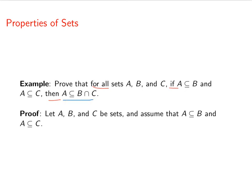And our goal now is to prove that A is a subset of B intersect C. Alright, so since we're trying to prove that A is a subset of B intersect C, then we choose an element out of A, a particular but arbitrarily chosen element of A.